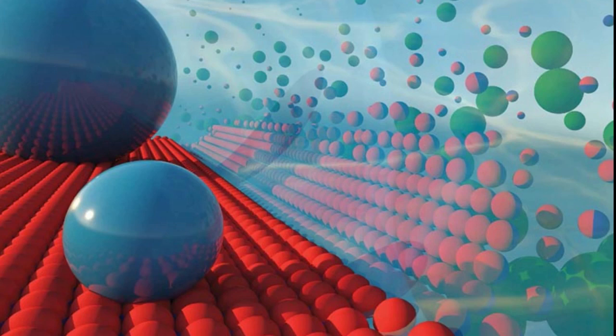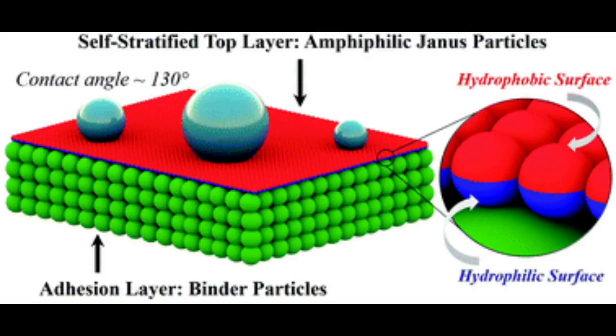The research team mixed the hydrophilic and hydrophobic Janus particles with commercial paints, then painted surfaces to see how the particles would react. The result? The hydrophilic side oriented to the surface and helped the coatings adhere better, while the hydrophobic side faced toward the surface and made it water-repellent.